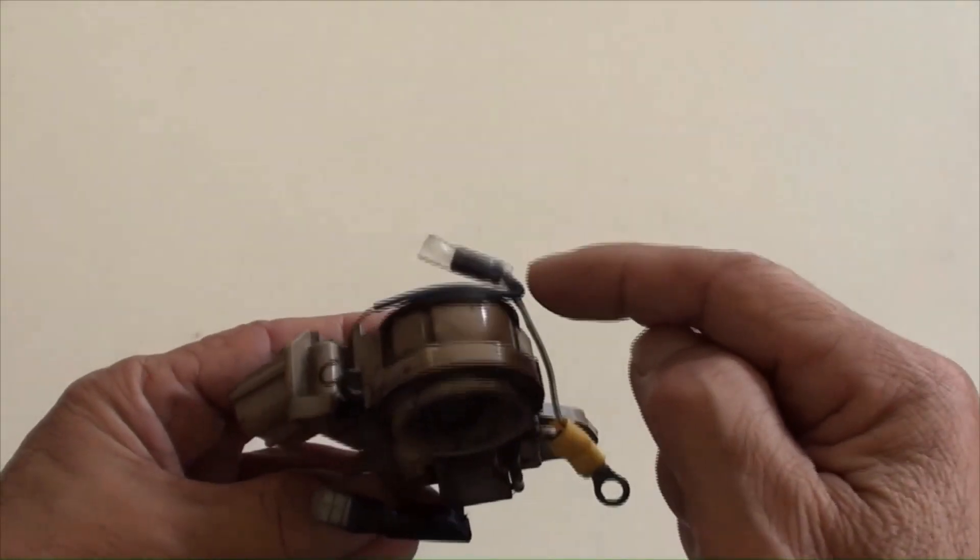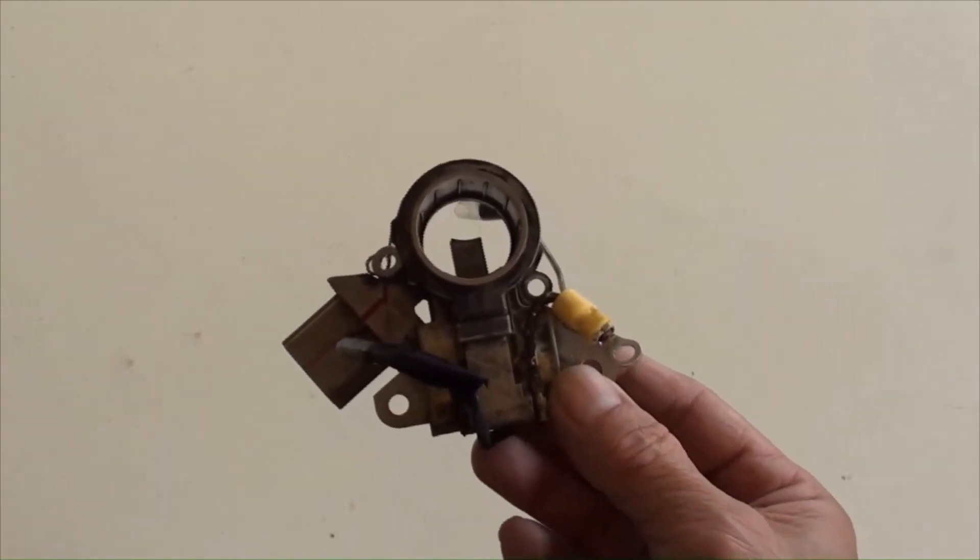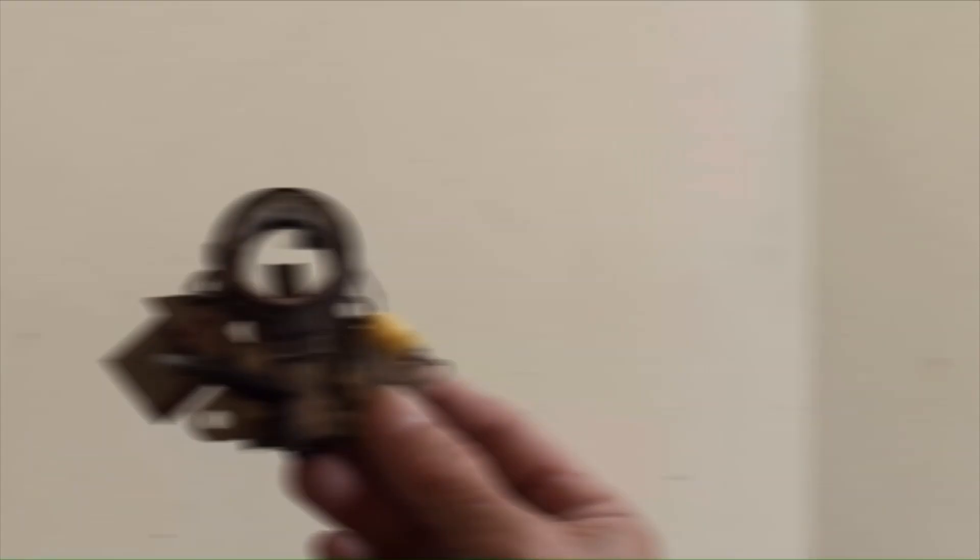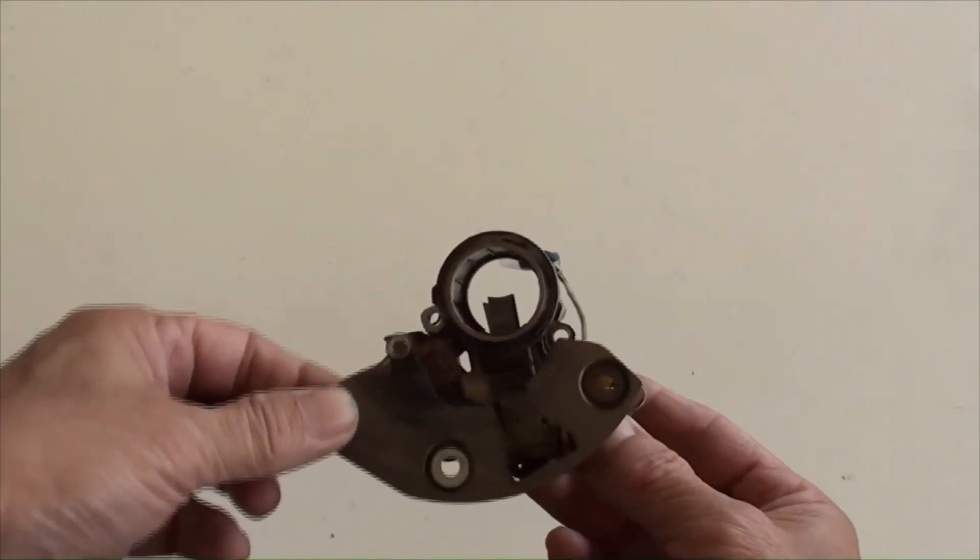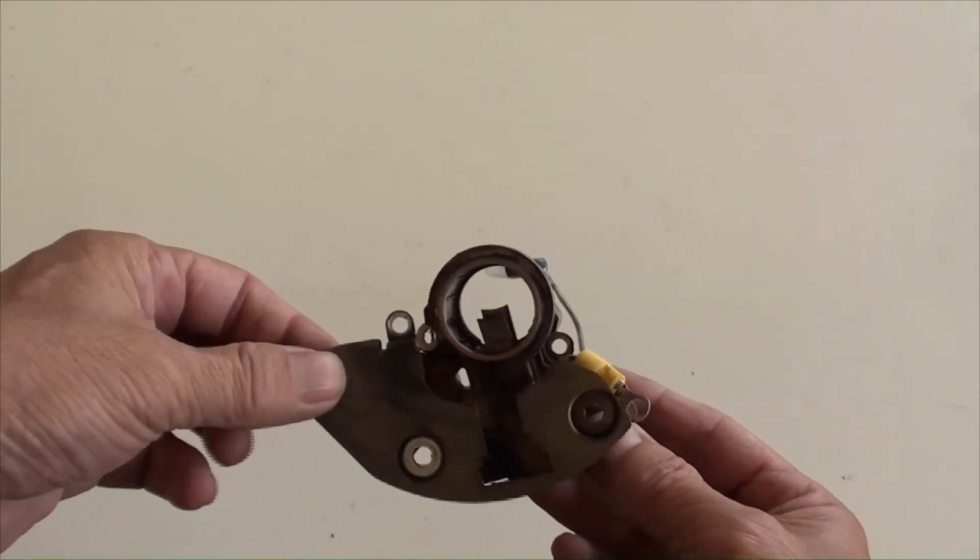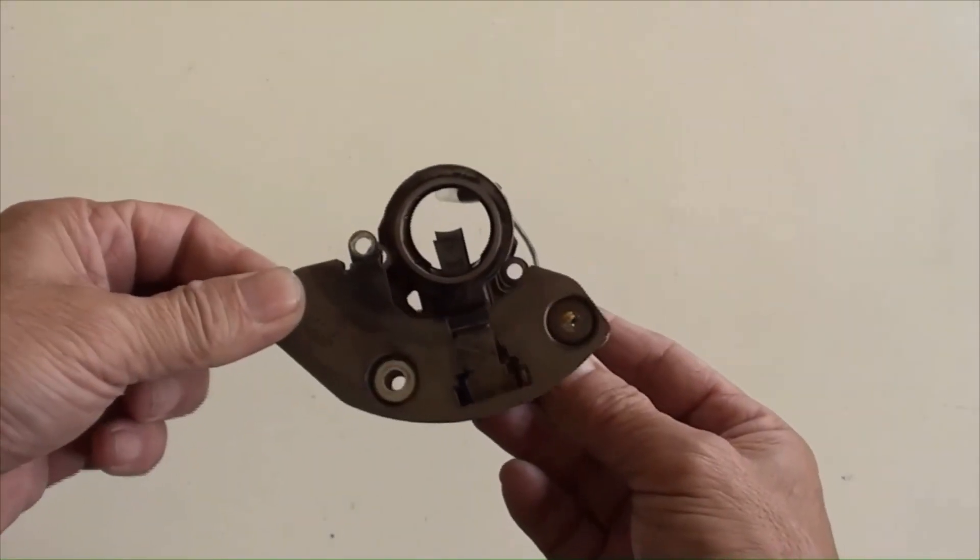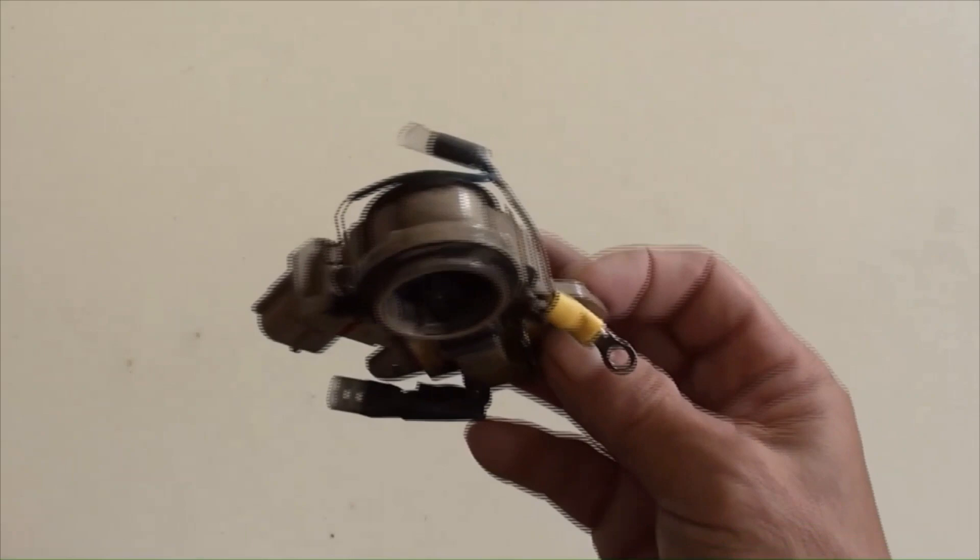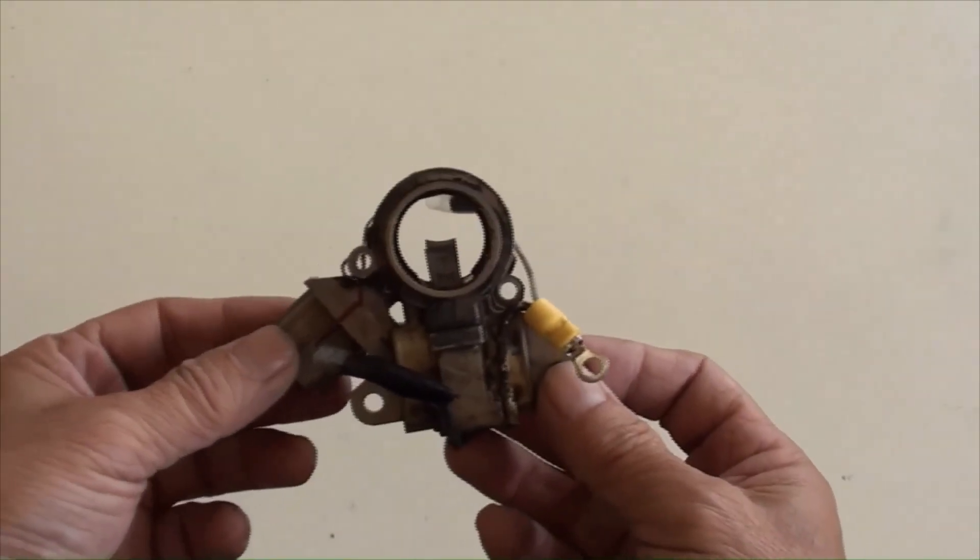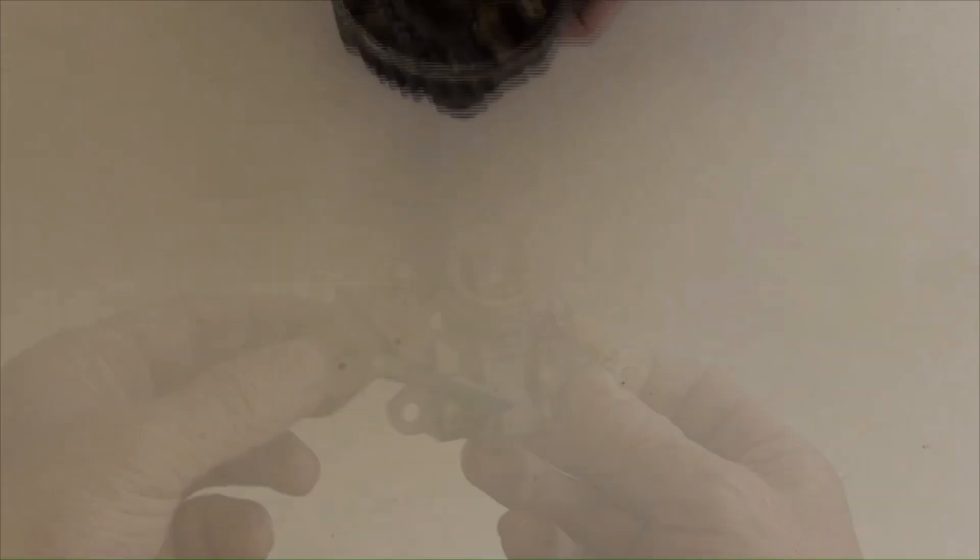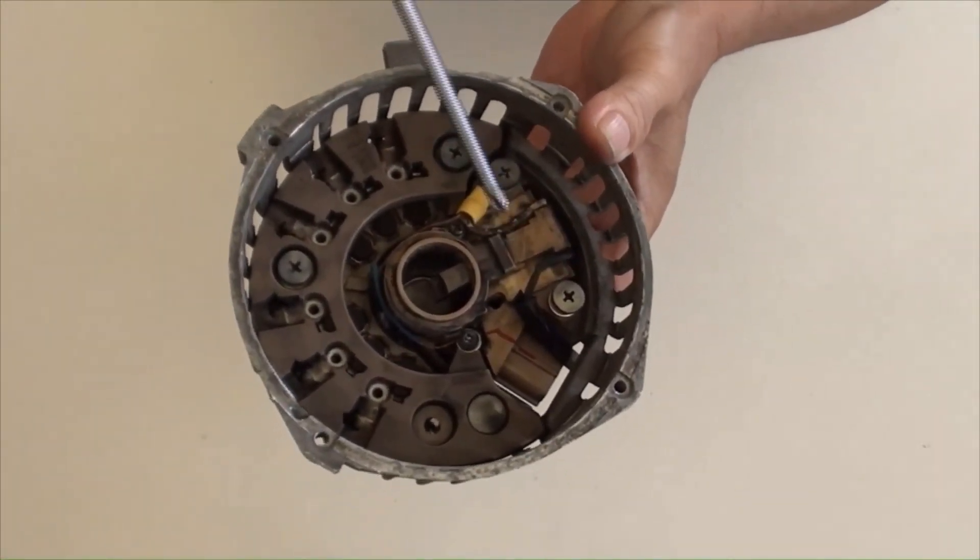This is a 2.2 microfarad capacitor. And its value is the same as the original one, which is here. It has to be taken away to make a space for those two wires. A capacitor will be connected to the two wires soldered to the brushes after assembly.